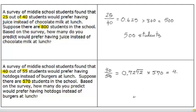Which turns out to be 414.5. So we round it off because we can't have a half a student and we get 415 students altogether. This says that 415 students would prefer to have hot dogs instead of burgers.